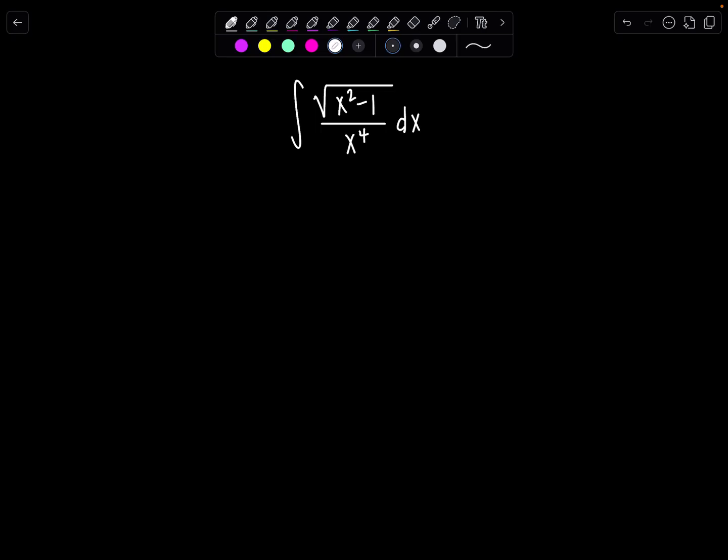So there's three different trig subs that we use. One involves sine, one involves tangent, one involves secant. And it all depends on this expression here that's underneath the radical. Now it doesn't always have to be underneath the radical but most of the time it is. When you have the variable quantity squared minus a constant you use secant as your trig function for the trig sub.